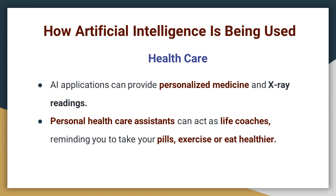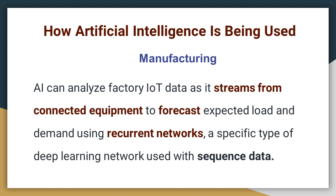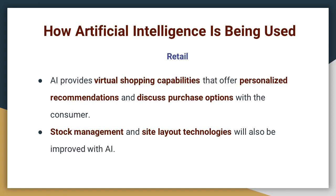One of the very popular areas of artificial intelligence implementation is healthcare. AI applications in healthcare can provide personalized medicine and x-ray readings. Personal healthcare assistants can act as life coaches, reminding you to take your pills, exercise and eat a healthier diet. AI is also used in manufacturing, where it can analyze factory IoT data streaming from connected equipment to forecast expected load and demand using recurrent networks — a specific type of deep learning network used with sequence data. In retail marketing, AI provides virtual shopping capabilities, data for personalized recommendations, and discusses purchase options with consumers. Stock management and site layout technologies will also be improved with AI, increasing efficiency and effectiveness of shopping.